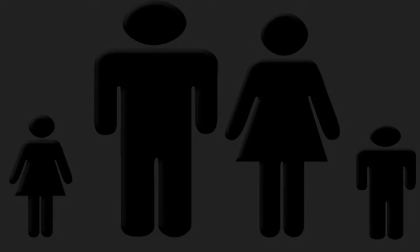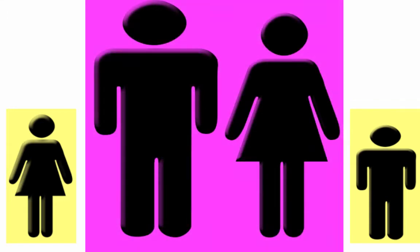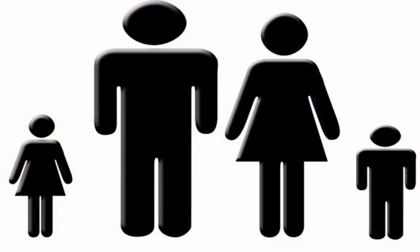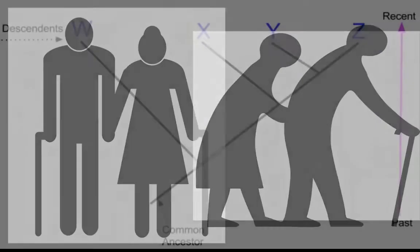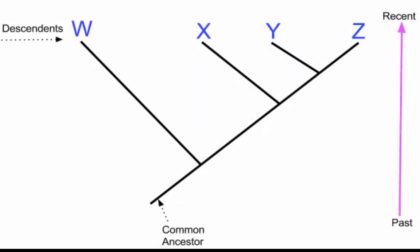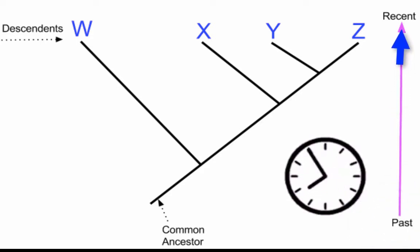So for example, you and your siblings would be descendants of your most recent common ancestor, which would be your parents. Other common ancestors you share with your siblings are your grandparents, your great-grandparents, your great-great-grandparents. The way you read time on this cladogram: the bottom is the past, and as you move up vertically, time moves forward.